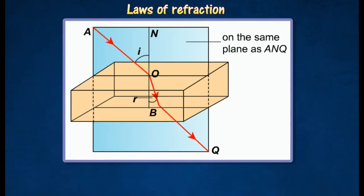For two given media, the ratio sin I over sin R is a constant, where I is the angle of incidence and R is the angle of refraction. This relationship is also known as Snell's Law.